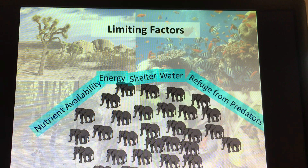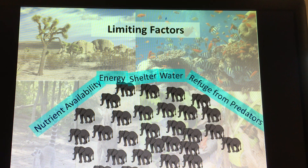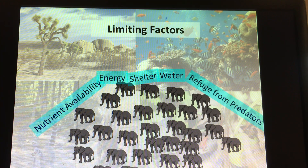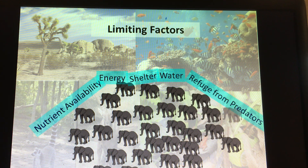What about shelter? Is it a deer that has a den where it has its babies, or a bear that hibernates, or a burrowing owl? Is there enough shelter? There is going to be competition for that. How about available water sources? Every single living thing needs water — is there enough? And you also have refuge from predators. These are just a few of the limiting factors that influence population size as well as population density.